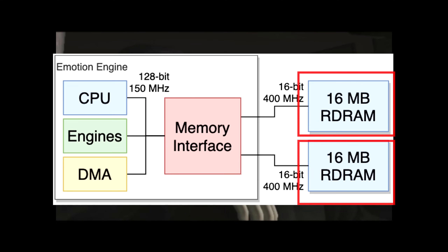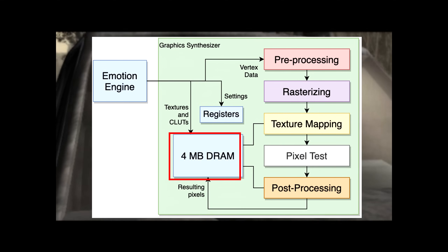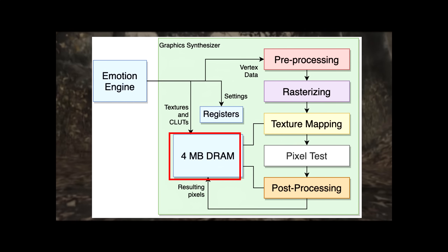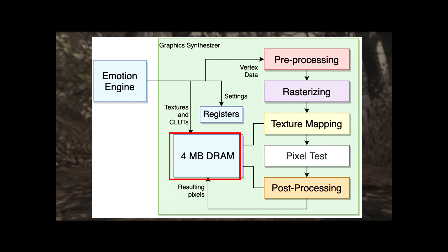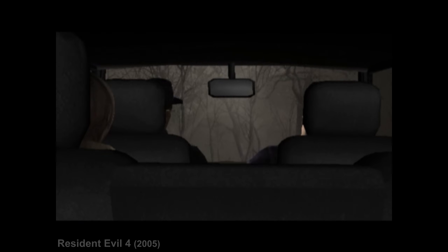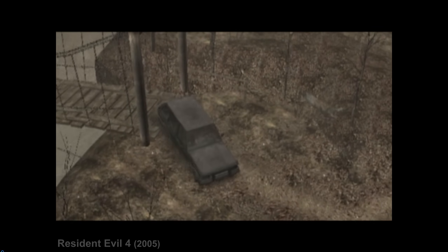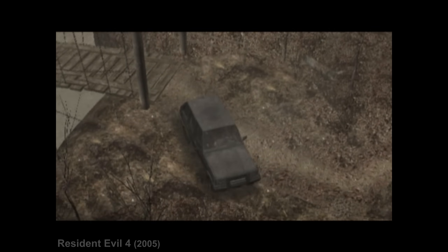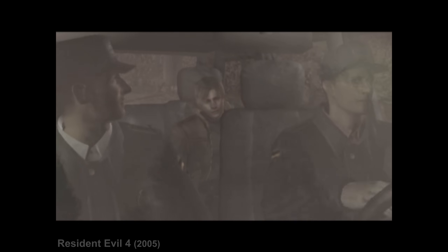For example, textures started in the RDRAM, got compressed sometimes via the image processing unit, and streamed into the Graphics Synthesizer's ED RAM. That 4 megabytes acted like a turbocharged buffer, while the 32 megabytes was the big storage warehouse. Developers had to juggle this tight memory setup, often sticking with low-res 256×256 textures, but the Graphics Synthesizer made it look seamless.